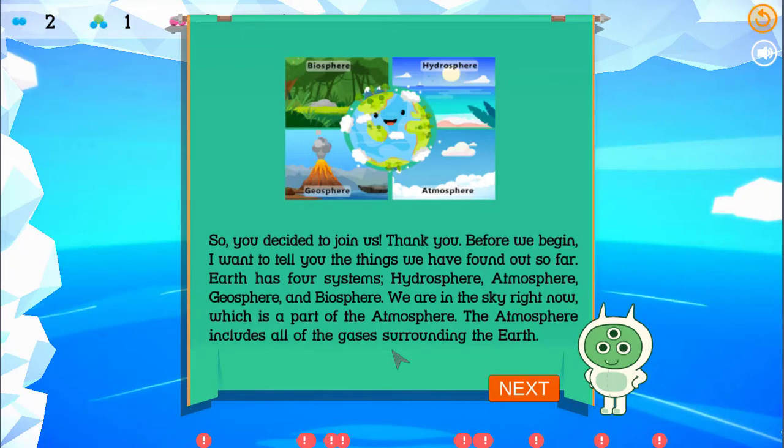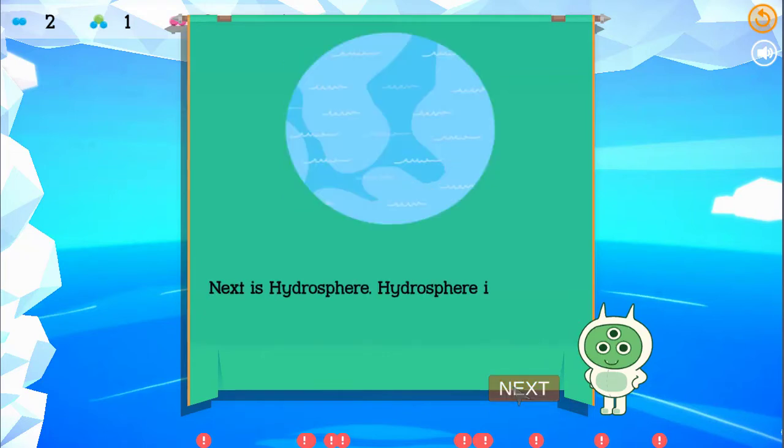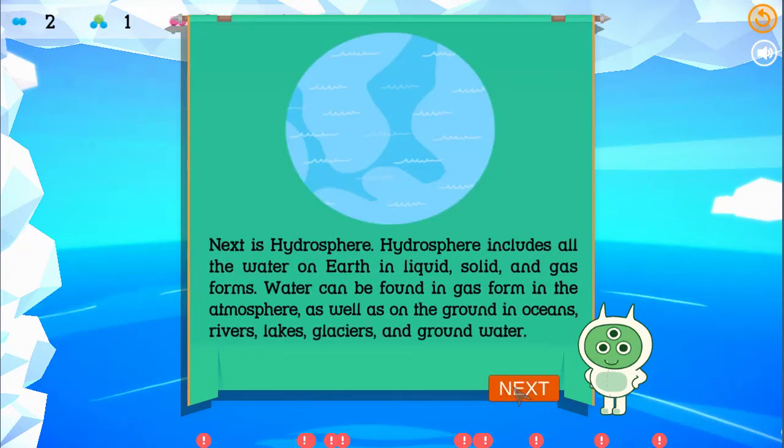We are in the sky right now, which is a part of the atmosphere. The atmosphere includes all of the gases surrounding the Earth. Next is hydrosphere. Hydrosphere includes all the water on Earth in liquid, solid, and gas forms. Water can be found in gas form in the atmosphere, as well as on the ground in oceans, rivers, lakes, glaciers, and groundwater.